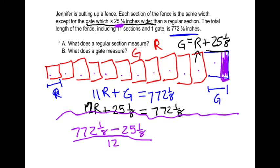My answer to part A: 62¼. My answer to part B then is going to be, if a regular section is 62¼, a gate is going to be 25⅛ more inches. So 62 plus 25 is 87, and ¼, which is the same as ⅛, plus 1 more eighth, is ⅜ inches.